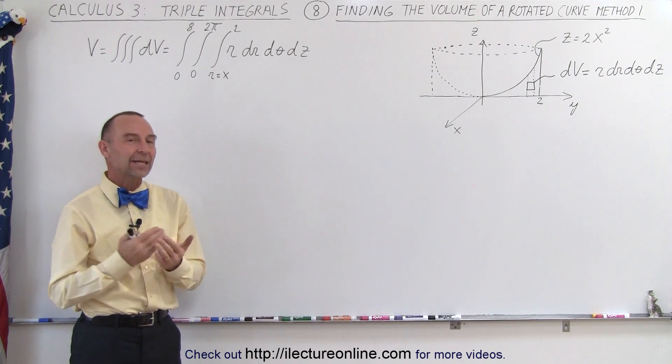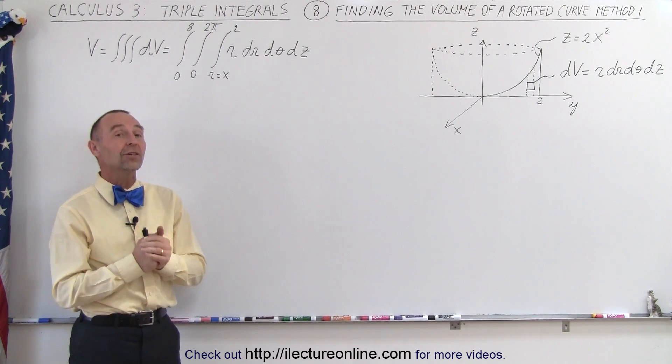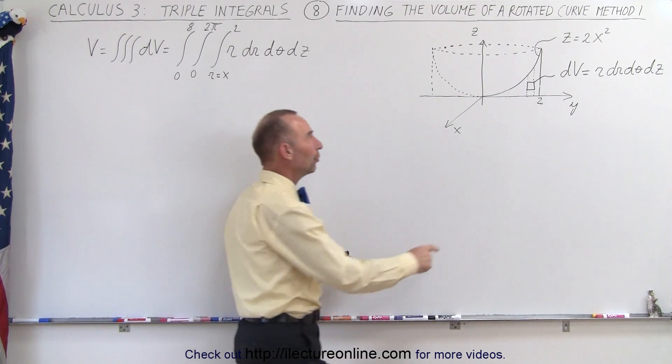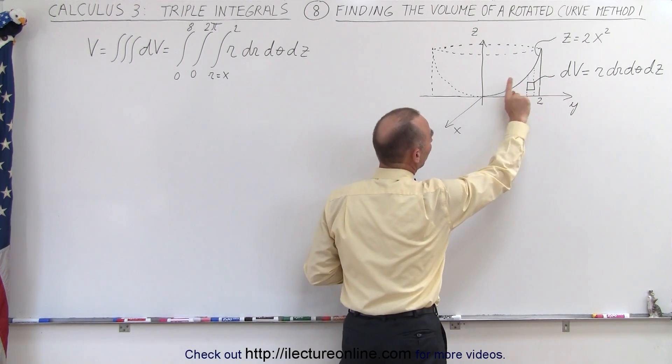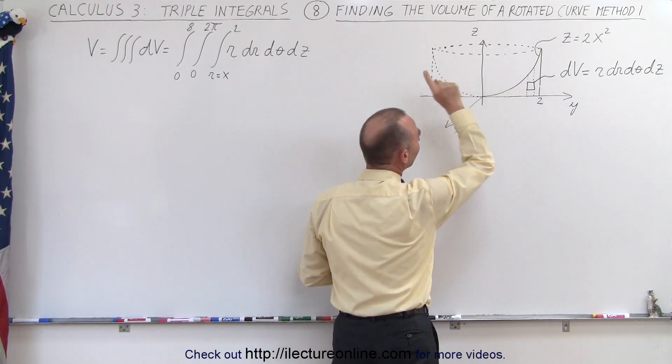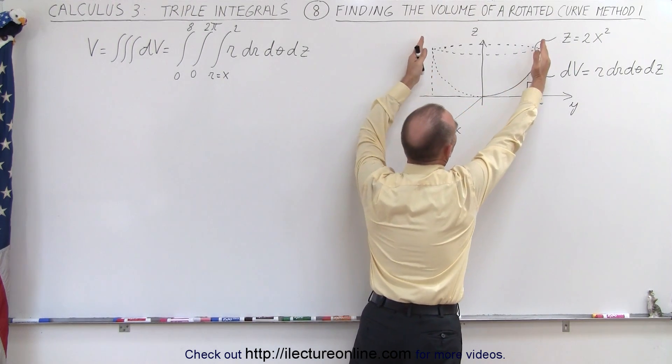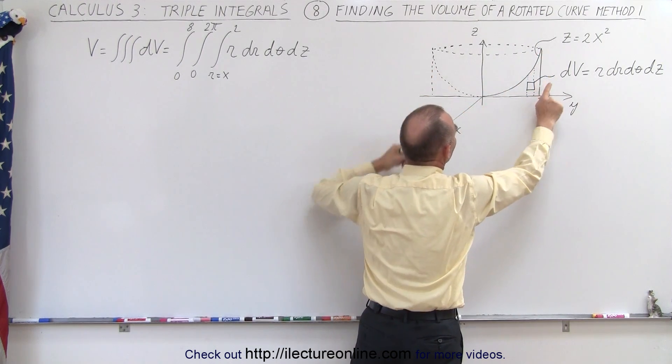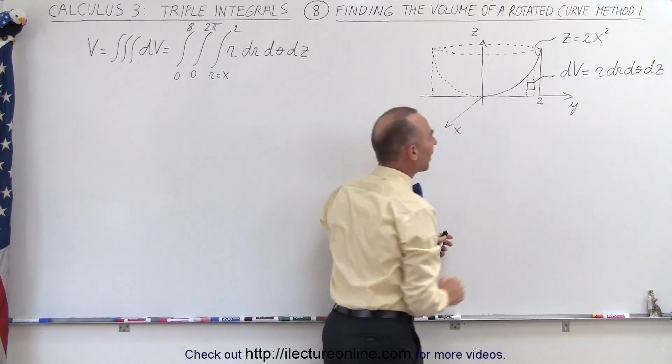Welcome to ElectronLine. Now here we're going to do something a little bit more challenging. We're going to take this curve where we have z equals 2x squared and rotate it about the z-axis, so we end up with a bowl-shaped object that has straight edges on the side, and we're trying to find the volume of that object.